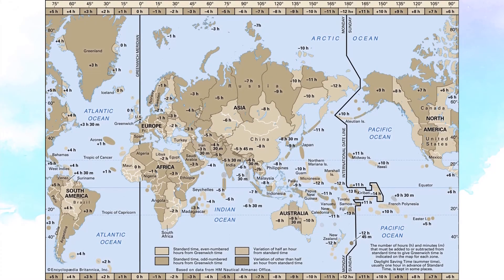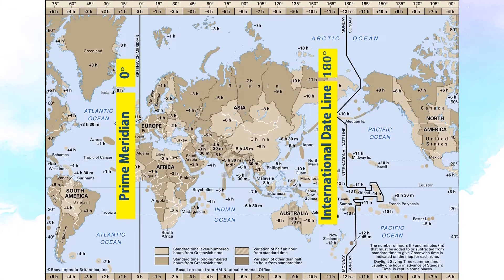On the map, this is how they look like. This is the prime meridian, and this is the international dateline.